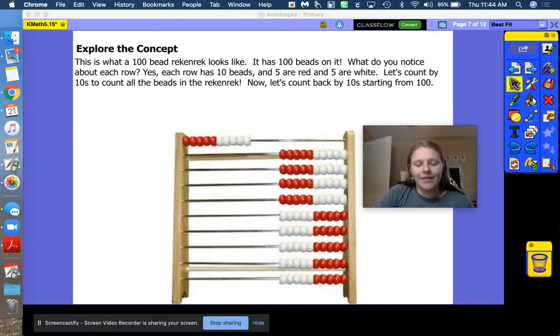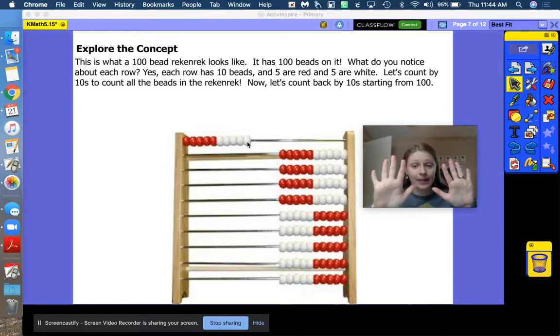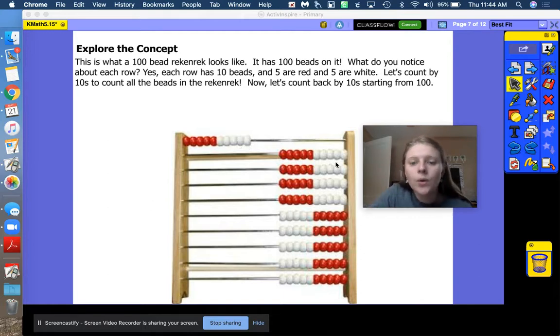Whoa, friends. Look at this math tool. Let's figure out how many beads it has on it by looking at the rows. How many beads are on this first row? Let's count. One, two, three, four, five, six, seven, eight, nine, ten. I notice I have five red beads and I have five white beads. Five and five makes ten. I also notice that each of these rows look the same. That must mean that this row has ten, this row has ten, this row all the way down. They all have ten. So that means that we can count by tens to figure out how many we have.